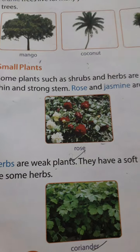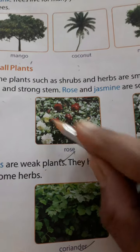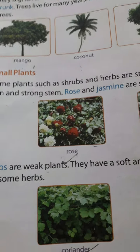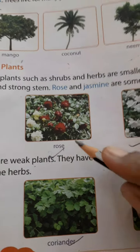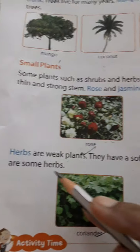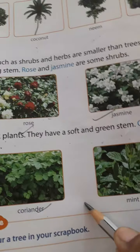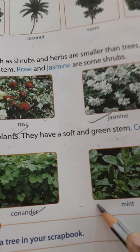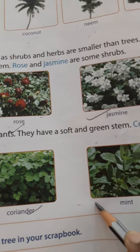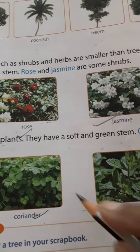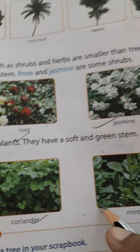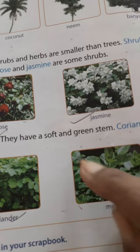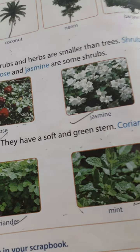Some plants are shrubs, which are smaller than trees. Shrubs have a thin and strong stem. Rose and jasmine are examples of shrubs. Herbs are weak plants — they have a soft and green stem.